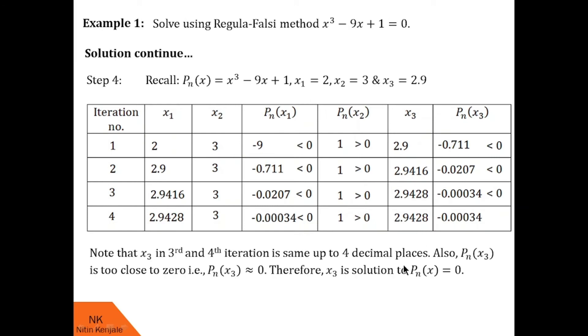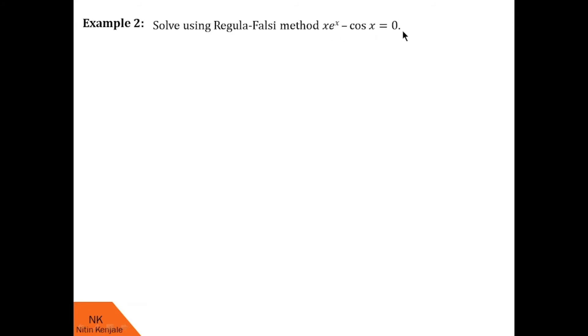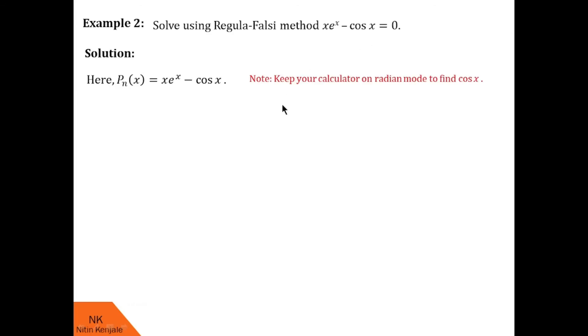We stopped iterating because the solution in successive iterations matches up to 4 decimal places. So the solution to this equation using the Regula Falsi method is x = 2.9428, correct to 4 decimal places. Now let us look at one more example: solve using the Regula Falsi method the equation x·eˣ − cos x = 0. This is a transcendental equation. Since it contains a trigonometric function, we keep our calculators in radian mode to evaluate f(x).